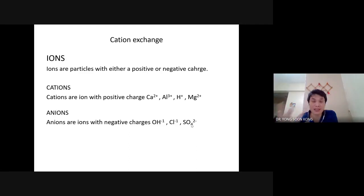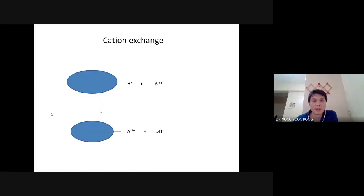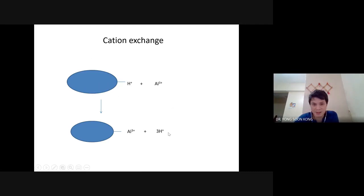What is being exchanged? The ions. If they are positive charge, they're cations; if negative charge, they're anions — the examples are as you can see. Now imagine that the top is before the reaction and after the reaction you can see they swapped places.